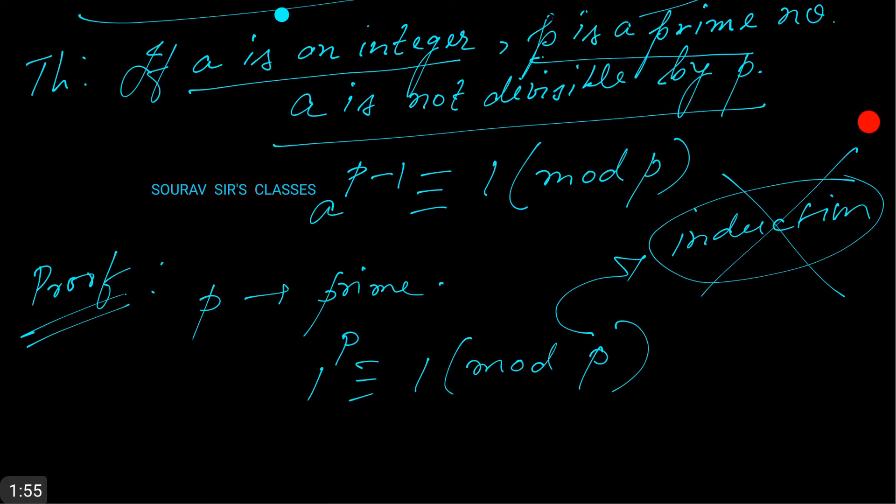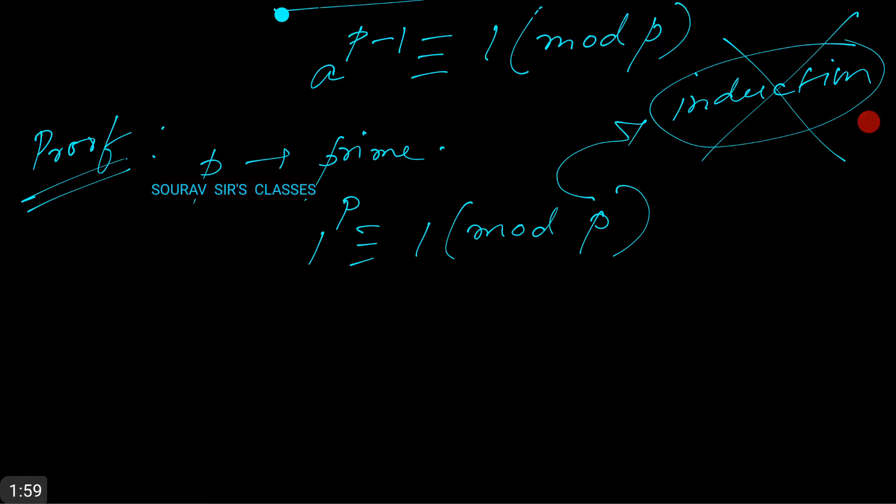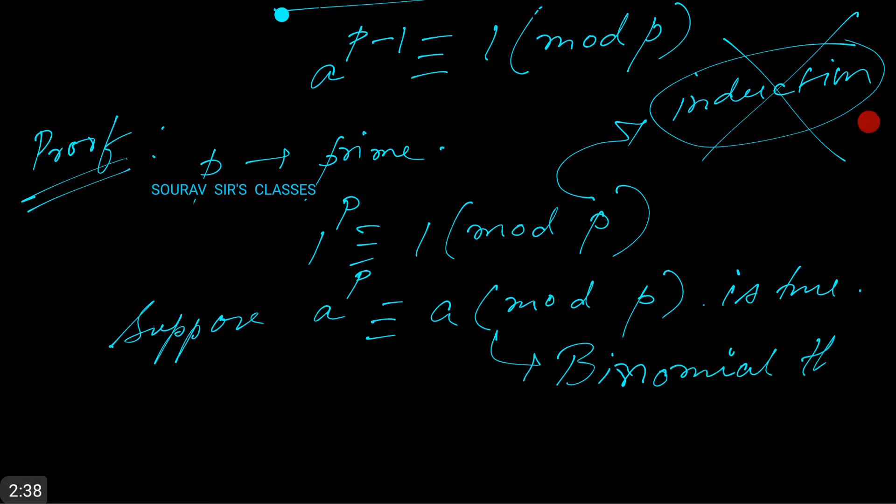Similarly, suppose the statement a to the power p is congruent to a mod p is true. Then by binomial theorem, we have a plus 1 to the power p is equal to...